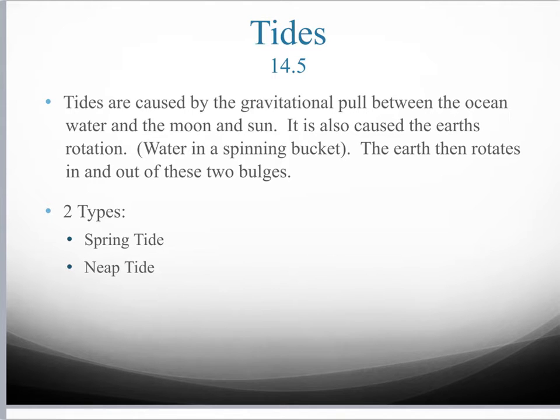We have two high tides on the Earth at one time. One is going to be pulled towards the moon, and the second is going to be caused by the rotation of the Earth, and it's going to be opposite the moon.